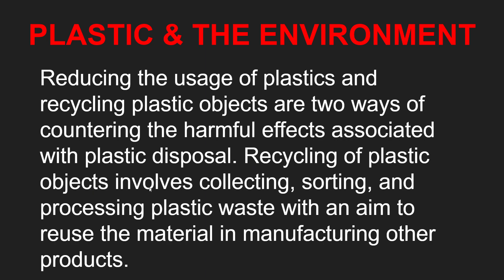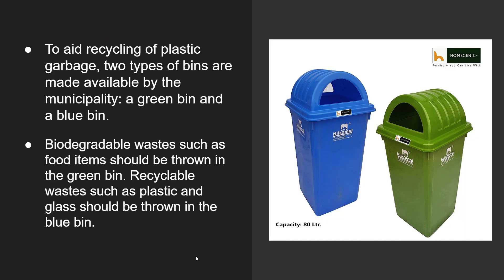Recycling of plastic objects involves collecting, sorting, and then processing the plastic waste with an aim to reuse that material. For recycling, we can keep two types of bins — a green bin and a blue bin. The green bin is always used for biodegradable items and food waste. Recyclable items like plastic and glass can be thrown in the blue bin. Both types of bins aid the recycling of plastic garbage.